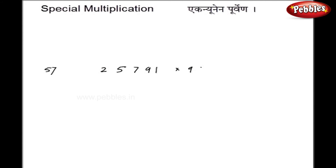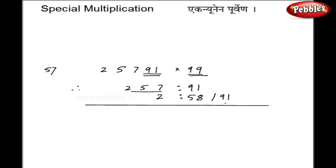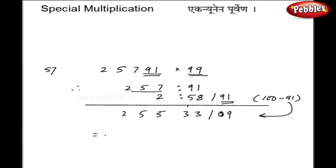Let us take one more example: 25791 multiplied by 99. Now in this case, my right hand side will have 2 digits. So 257 is on the left hand side and 91 on the right hand side. As the next step I add 1, so the left becomes 258, and 91 comes as it is. Now there are 2 digits on the right hand side, so I subtract from 100. So 100 minus 91 gives 09 — mind well, write 09, not just 9, because 2 digits are there. The rest of the calculations give 3, 3, 5, 5, 2. So my final answer is 2553309.